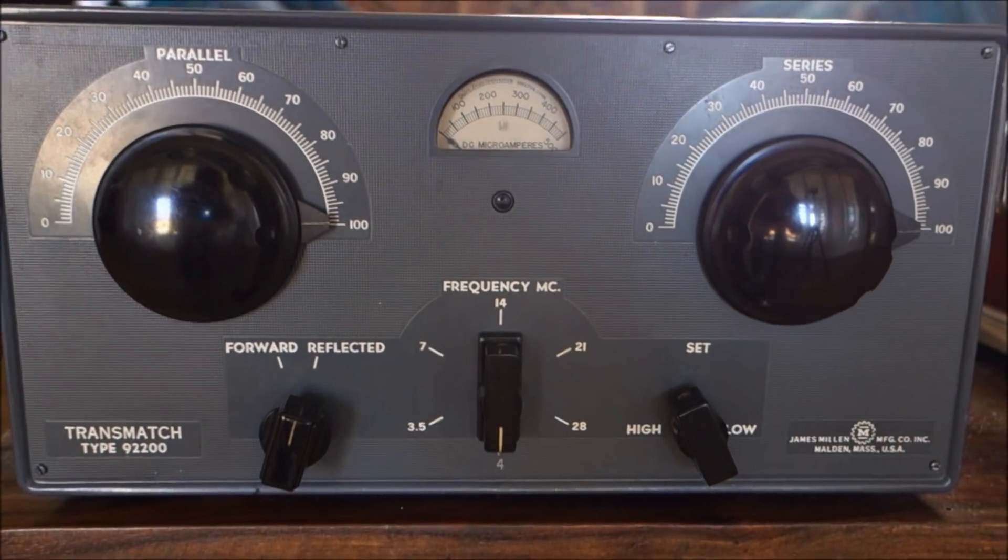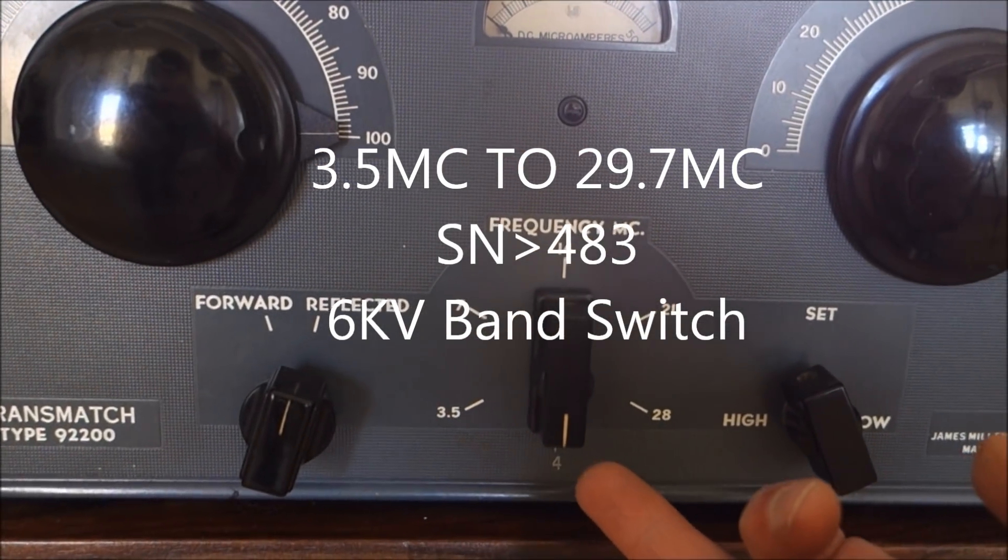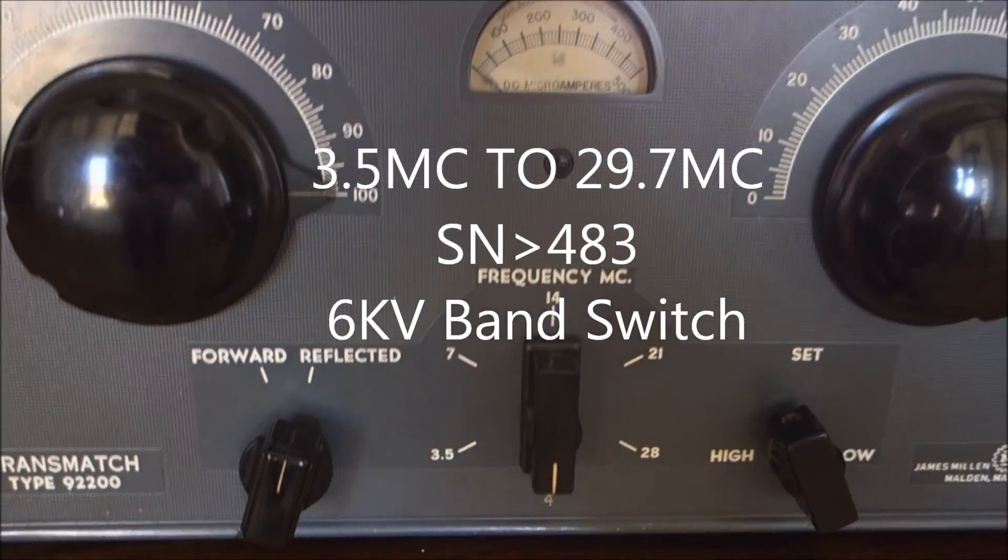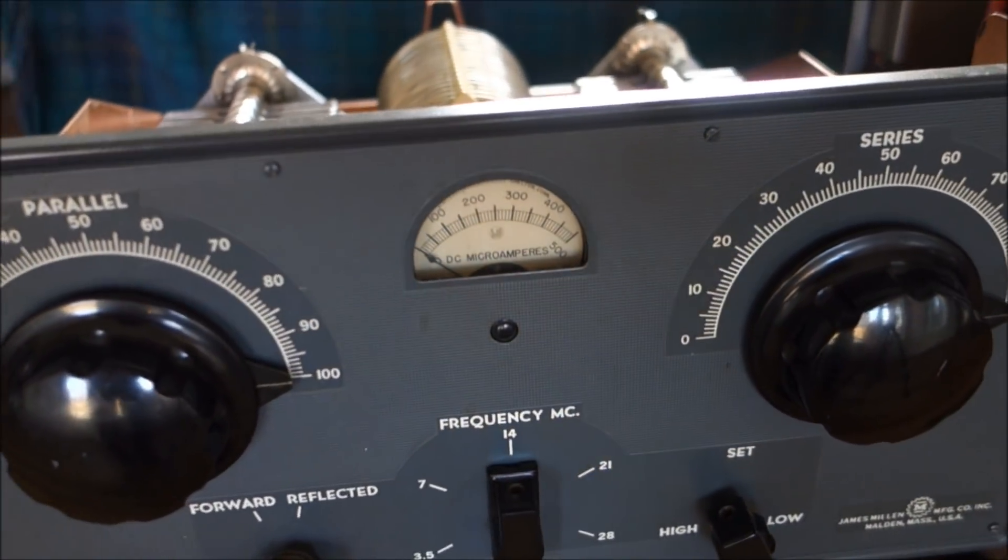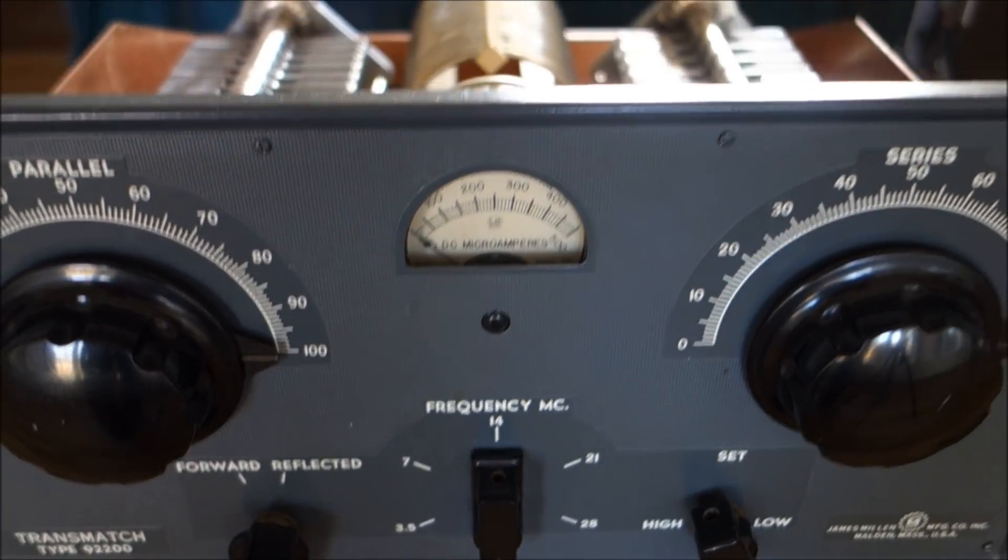The later models, about 500 and up, they added a secondary band setting here for four megacycles. It has a SWR reflectometer here for just getting relative SWR measurements.